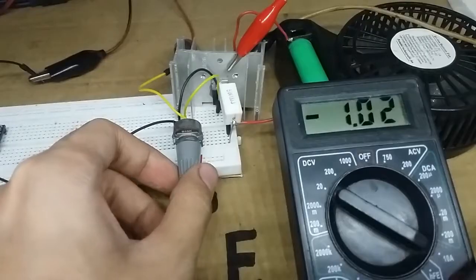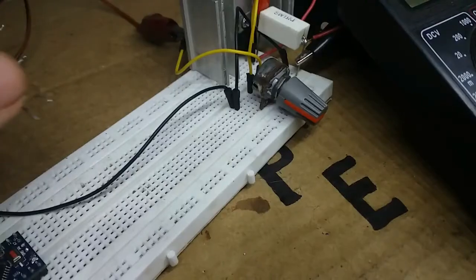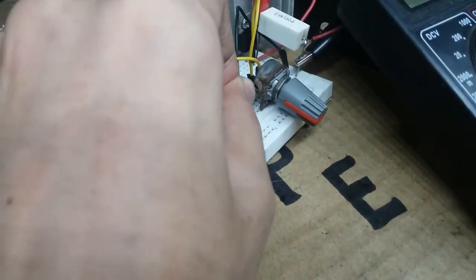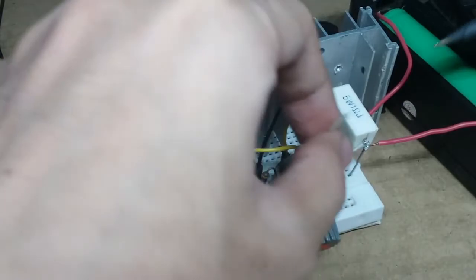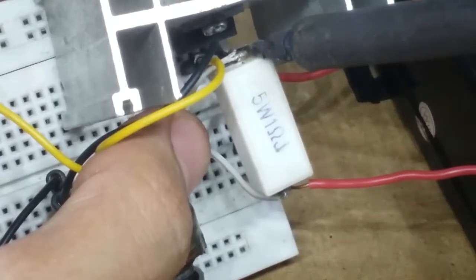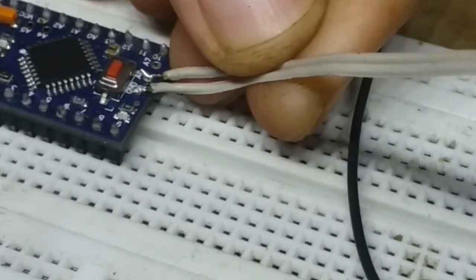But we have a little problem here. The current adjustment is not that fine. So I place a 4.7 kilo ohm resistor in series with a potentiometer. We connect the negative for the battery to the Arduino ground. And the other side of the shunt resistor to Arduino analog input 6.